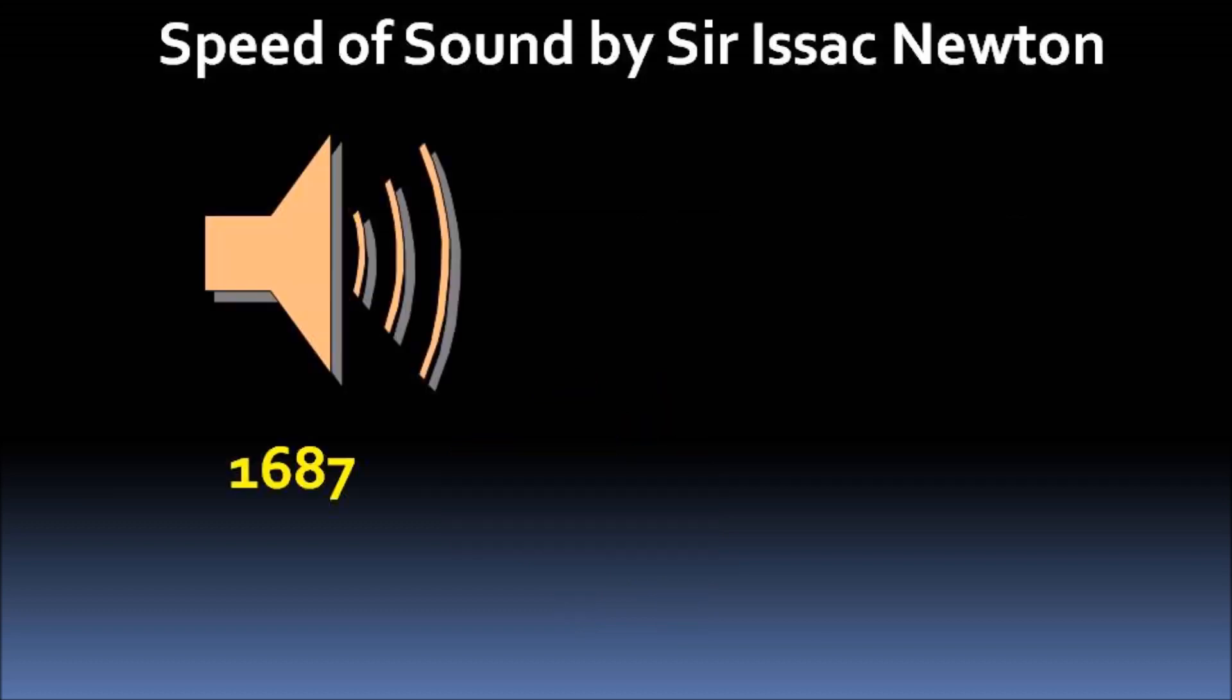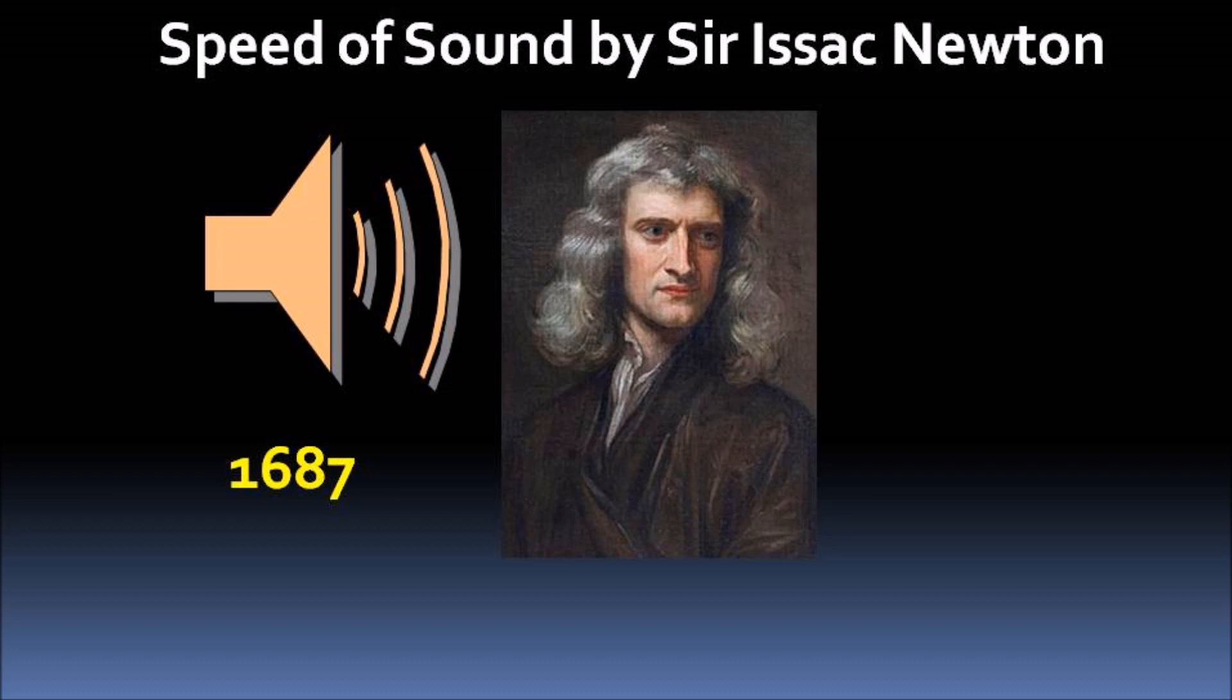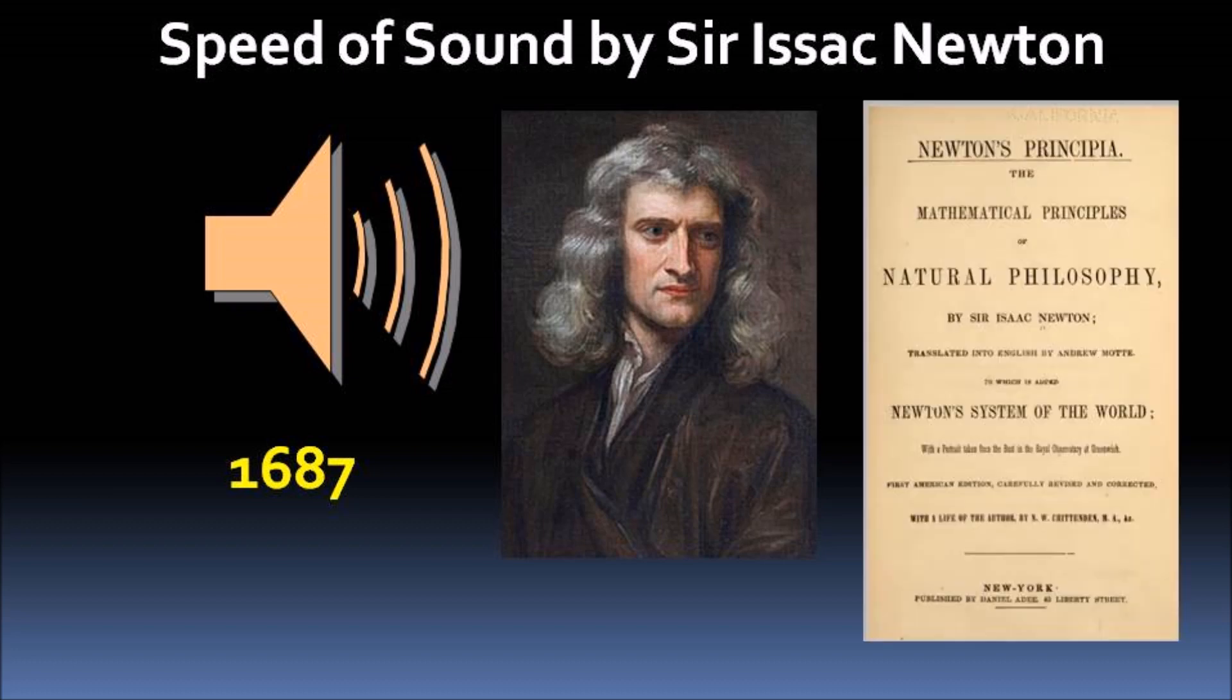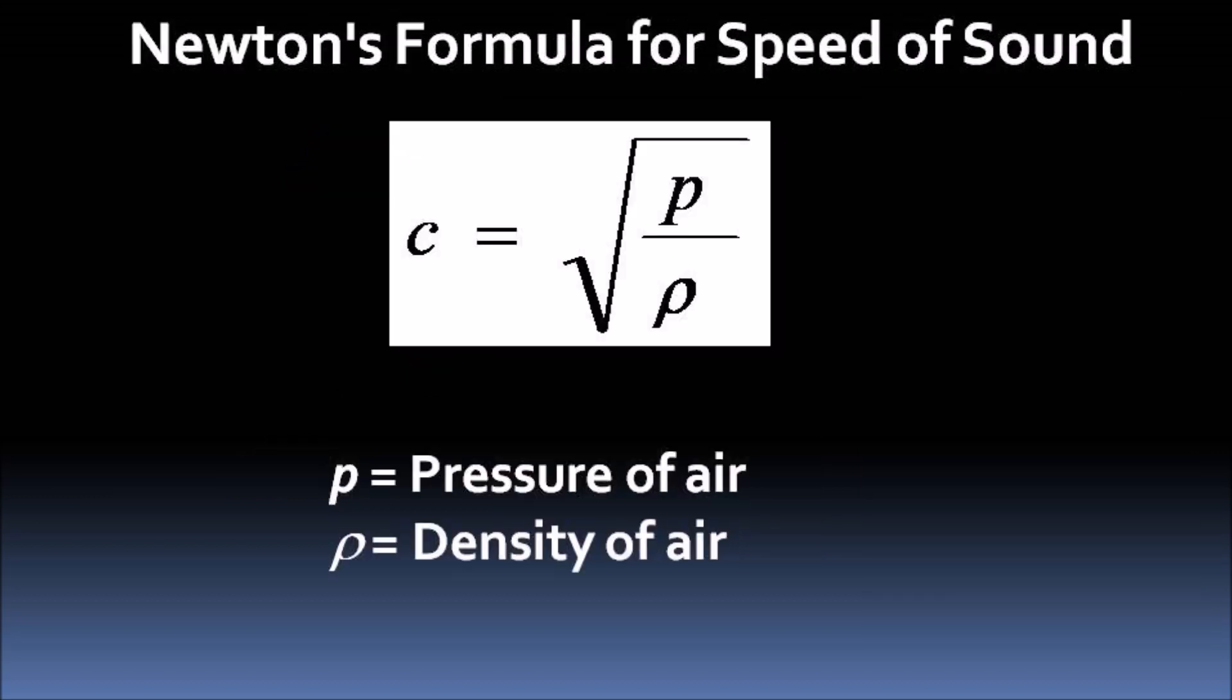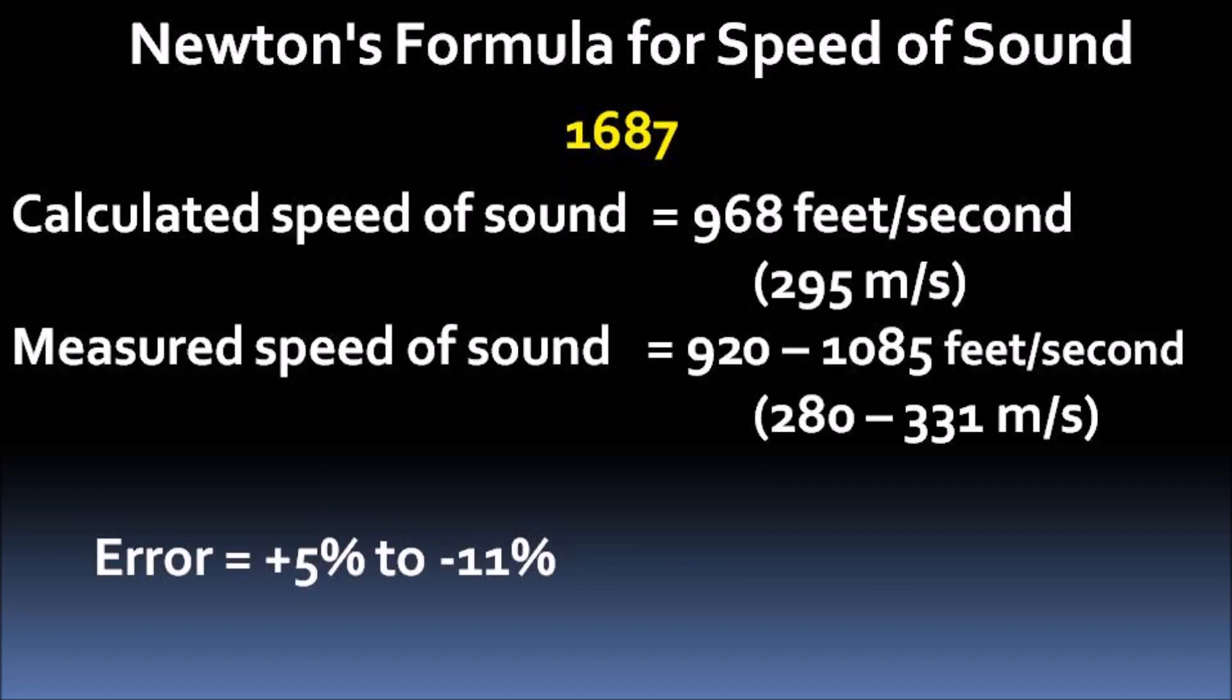The scientific analysis for the speed of sound was given first time in 1687 in the first edition of Newton's Principia. Newton gave speed of sound expression as square root of the ratio of pressure to density of the air. When first published, the calculated speed of sound was around 10% less than the measured speed of sound in those days.